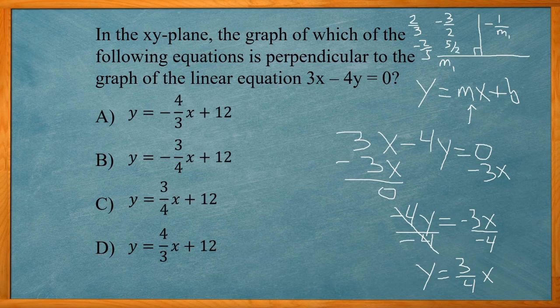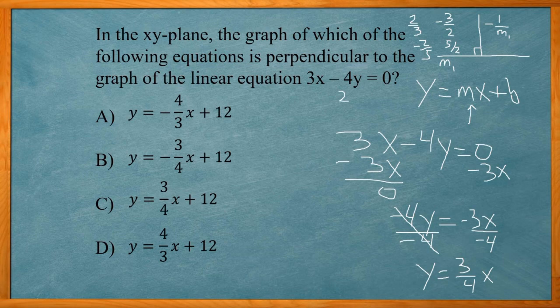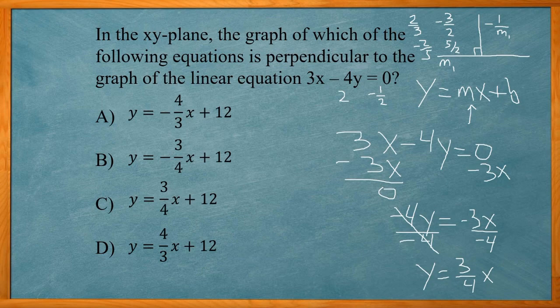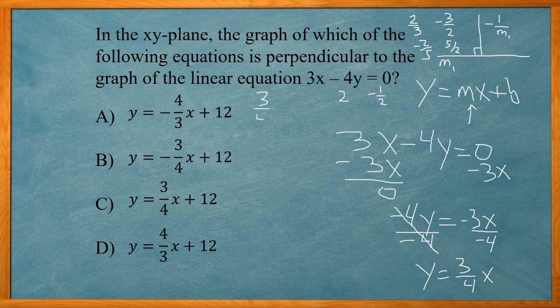If I had 2, negative reciprocal would be negative 1 half because 2 is the same as 2 over 1. So I flip that over, it'd be 1 over 2 and change the sign. So over here, we're dealing with 3 fourths. So the negative reciprocal of that would be negative 4 thirds.